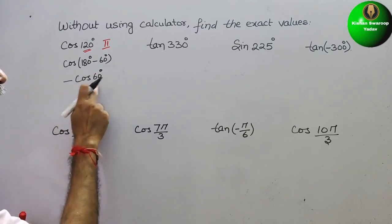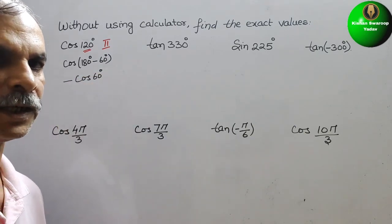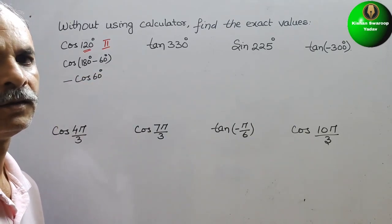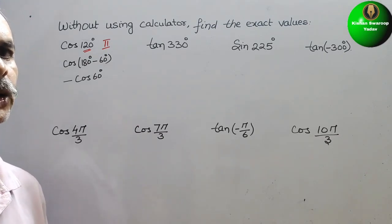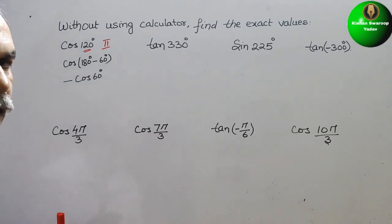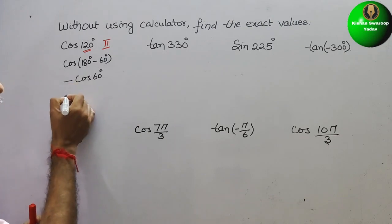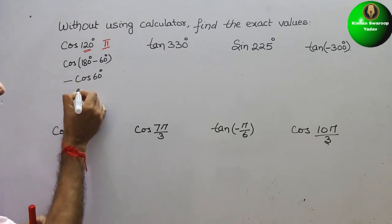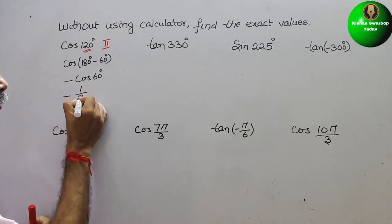Now find out the value of cos 60°. We know the table — cos 60° is 1/2. So now, with the minus sign, we will put minus 1/2.